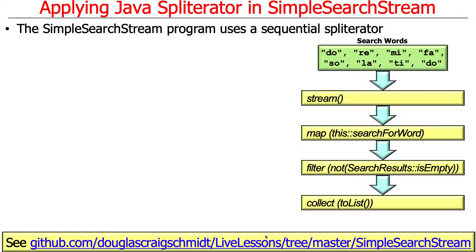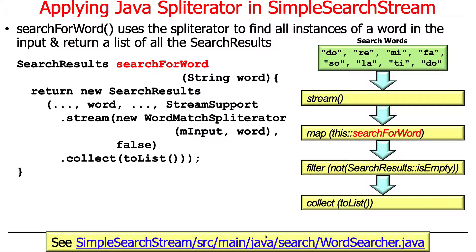This is a so-called sequential spliterator. We'll talk later in the course about parallel spliterators, and you'll get more chance to learn about those in upcoming sessions. The particular part here is the search-for-word method. What search-for-word does is it uses a spliterator to find all instances of a word in the input — the input being the set of lyrics from the Do-Re-Mi song — and it returns a list of all the corresponding search results.